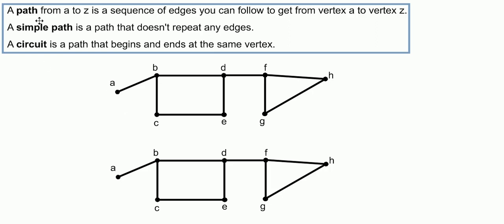We call a way to get from one vertex to another a path. And we can think of that as a sequence of edges you follow to get from vertex A to vertex Z. Now in this case, we don't have an A to Z, but we could look for a path from maybe A to F or from D to H. And there are lots of different paths we could use.